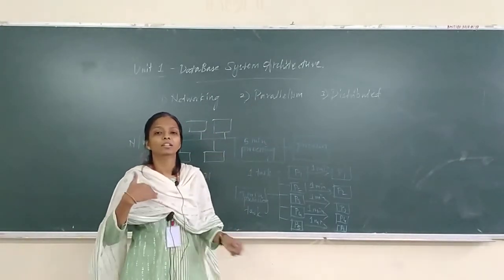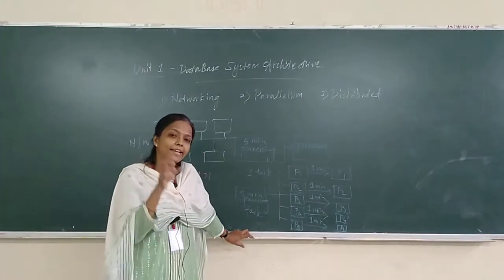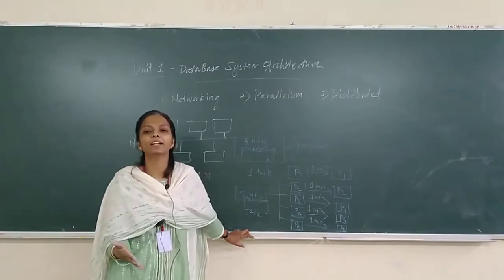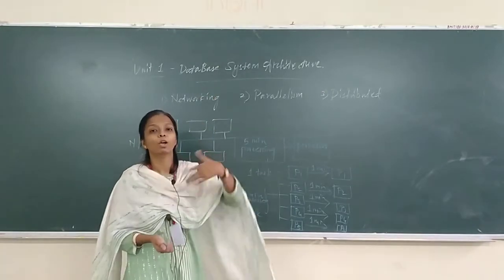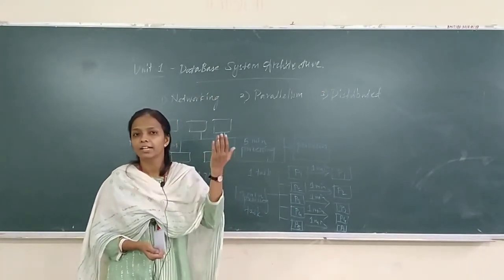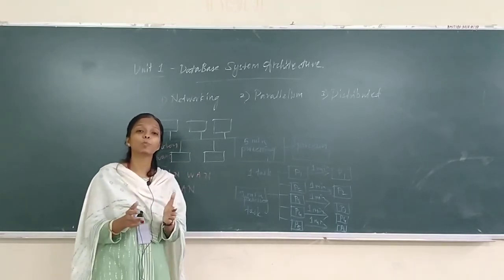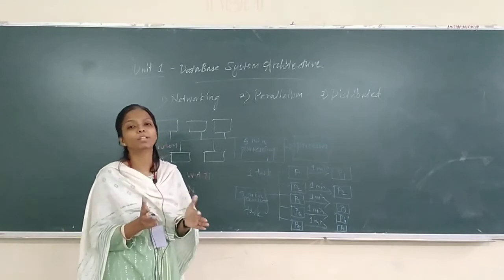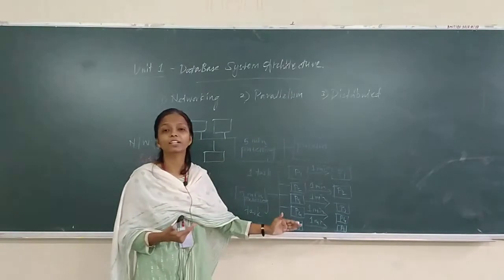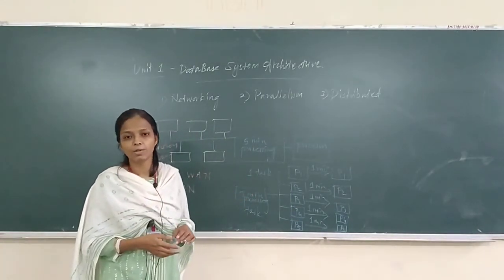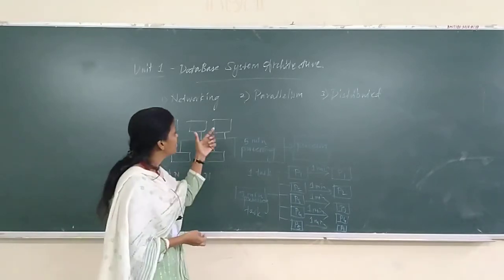Parallelism is a very important concept in database systems. Why? Because a database consists of many transactions and many database operations, and those operations should be performed in minimum time. To achieve that, you can have multiple processors working simultaneously at the same time, producing the same output in less time.